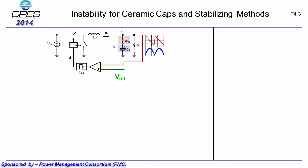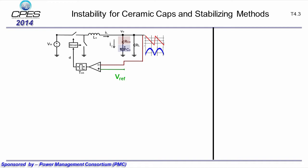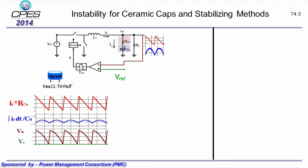The issue for this structure is that stability is related to capacitor parameters, as the output voltage contains ESR ripple and a capacitor voltage ripple. For large ESR caps such as OSCON caps, the ESR ripple is dominant and the structure is elegant. However, for small ESR caps such as ceramic caps, capacitor voltage feedback is strong and instability is observed.